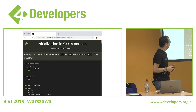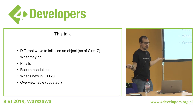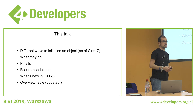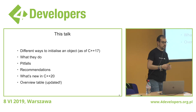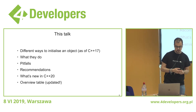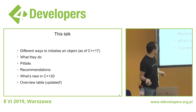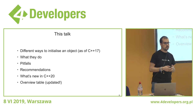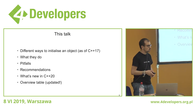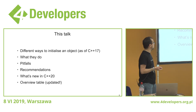So giving a talk about this topic is an interesting challenge, but I'm going to try and do it anyway. What we're going to talk about is different ways to initialize an object as of C++17 in the current standard, what these different ways actually do, what pitfalls you can fall into, recommendations on when to use what, and then a few slides about what's new in C++20 with regards to initialization, and then an overview table of all the different kinds of initialization.